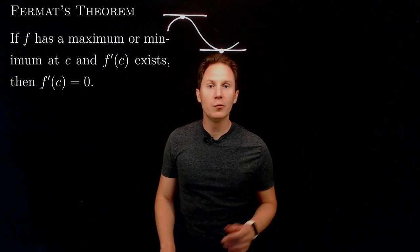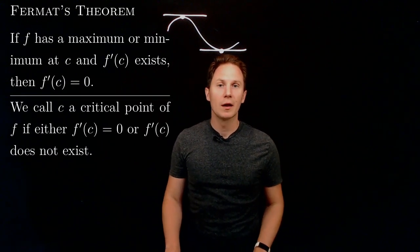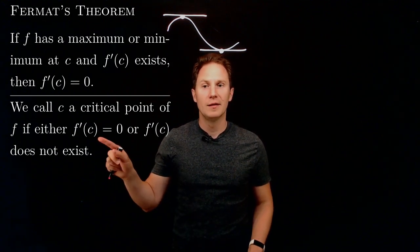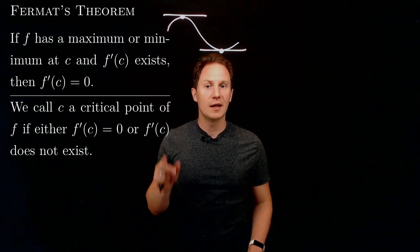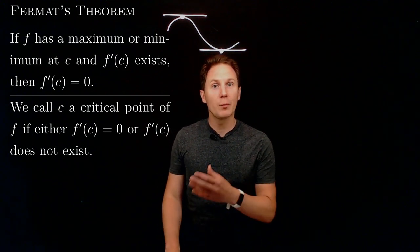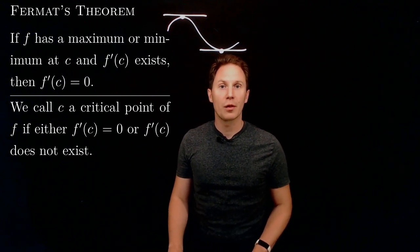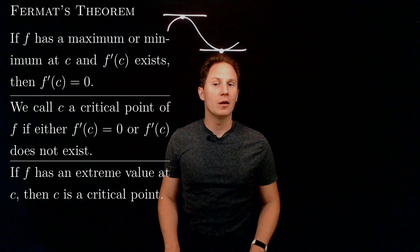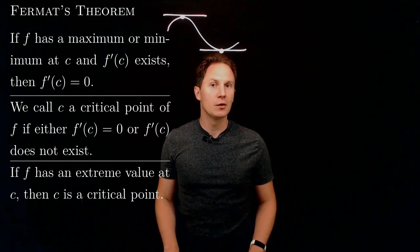Because of these two cases it's good to introduce the notion of a critical point. We say that c is a critical point of the function f if either the derivative f'(c) is zero, or the derivative at that point does not exist. Using this, we can restate Fermat's theorem: if f has an extreme value at c, then c must be a critical point.